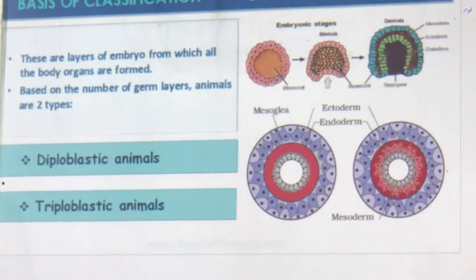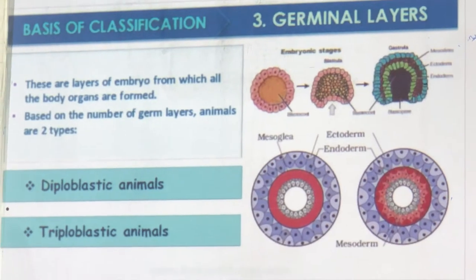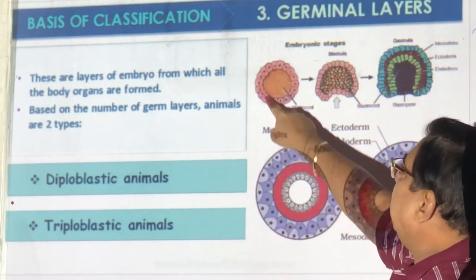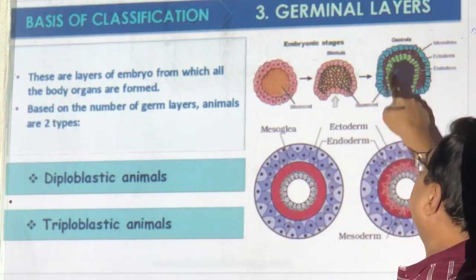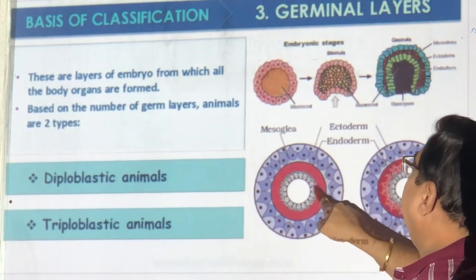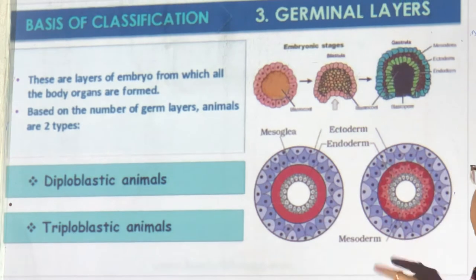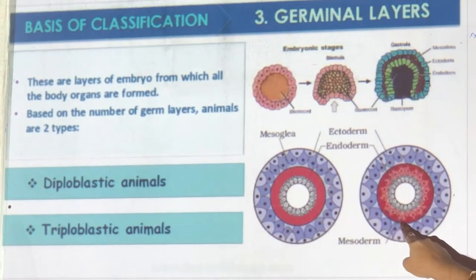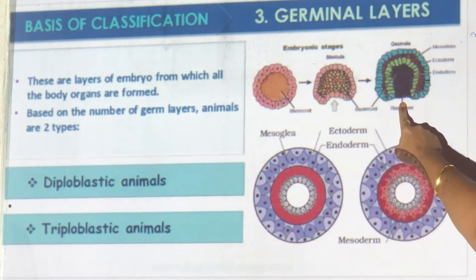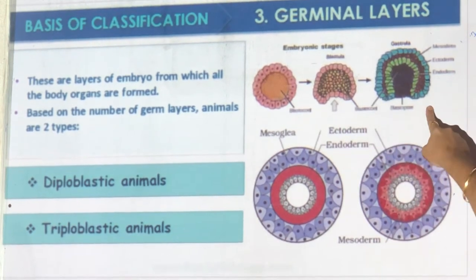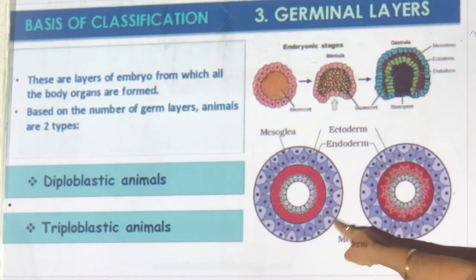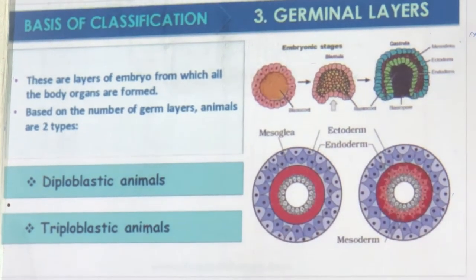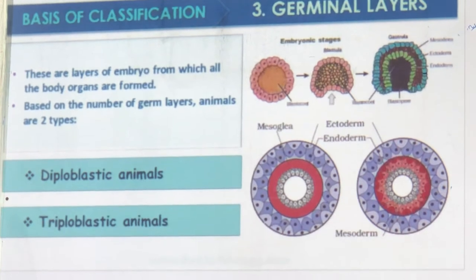How many germ layers are there? We start with the blastocyst, then a second layer forms, and then three layers get formed. Mesoderm comes in between ectoderm and endoderm. If no germ layers are formed, as in sponges; two layers — diploblastic; three layers — triploblastic. Higher animals have more germ layers. The maximum is three — that is the last.